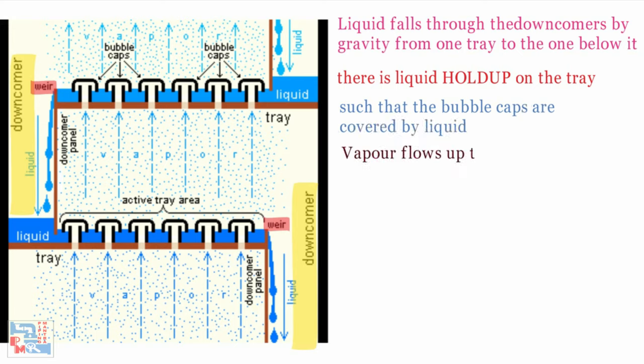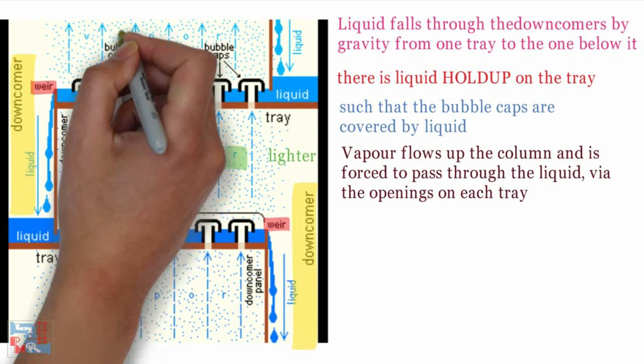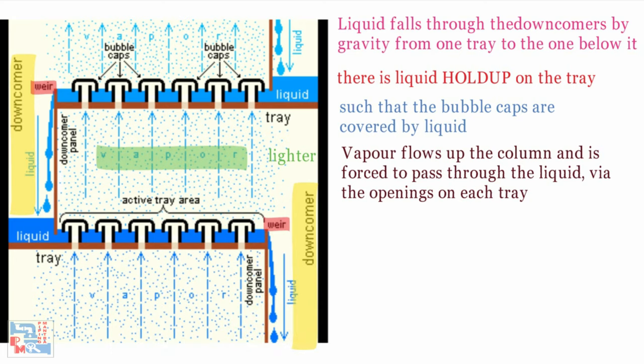For example such that the bubble caps are covered by liquid. Being lighter, vapor flows up the column and is forced to pass through the liquid via the openings on each tray. The area allowed for the passage of vapor on each tray is called the active tray area.